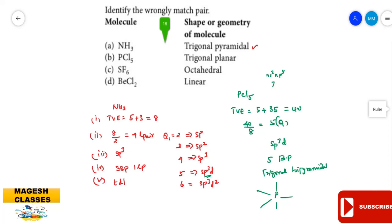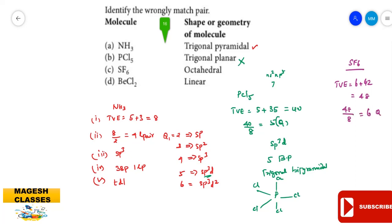PCl₅ has a regular trigonal bipyramidal shape — but in the question it is given as trigonal planar, which is wrongly matched. For SF₆, total valence electrons = 6 from sulfur + 42 from six fluorine atoms (each with 7 electrons), totaling 48. Dividing 48 by 8 gives quotient 6, so hybridization is sp³d².